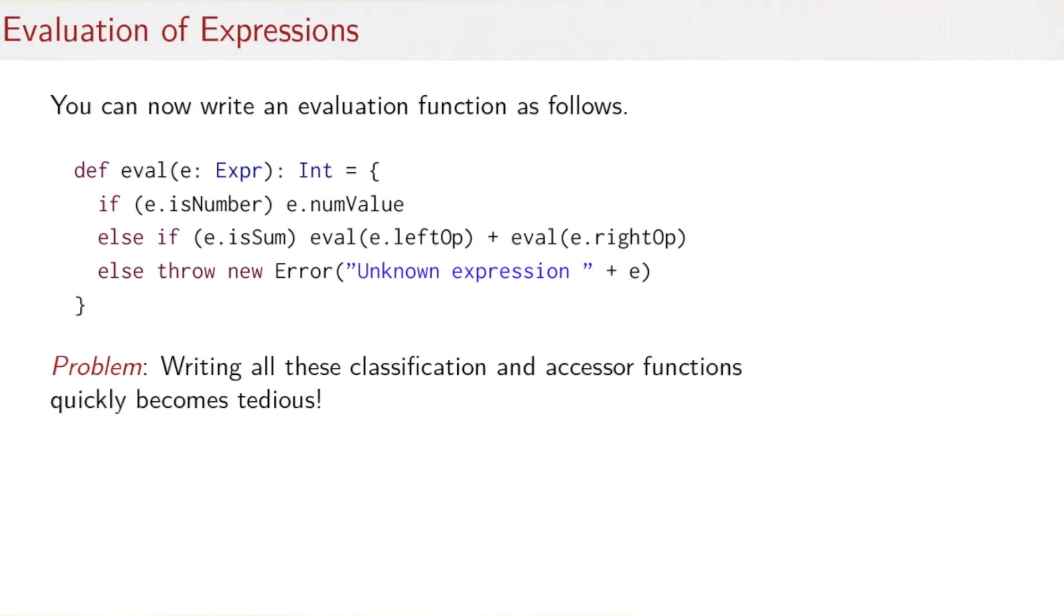So now that we've got the basic wiring of expressions, let's do something with it. One thing we could do is write an evaluation function. So the evaluation function should take one of these expression trees and it should return the number that it represents. So for instance, I would like to have that eval of sum of the number one and the number two should give me three.